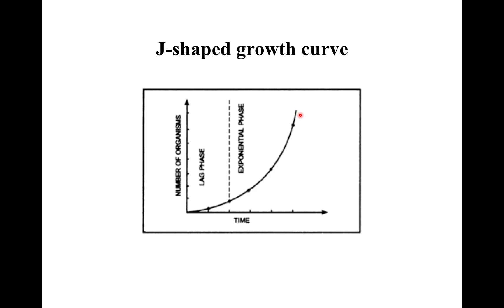This type of growth curve can be seen in organisms which have a short life cycle or fast growth, like populations of insects, algal blooms, reindeer, and the lemmings of the tundra.